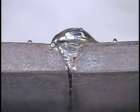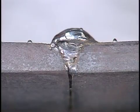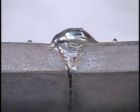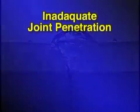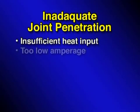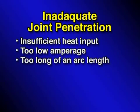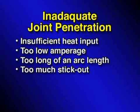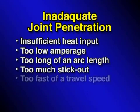The final defect to be discussed is inadequate joint penetration, or penetration which is less than specified. This defect is commonly located at the root of a weld and is generally caused by insufficient heat input while welding, too low of an amperage setting, too long of an arc length, or too much stick out, which also reduces heat input, and too fast a travel speed.